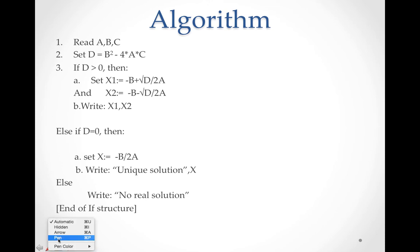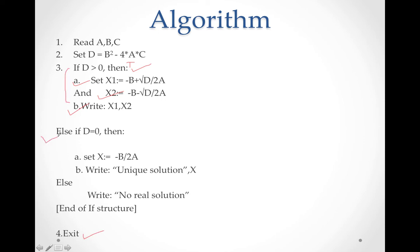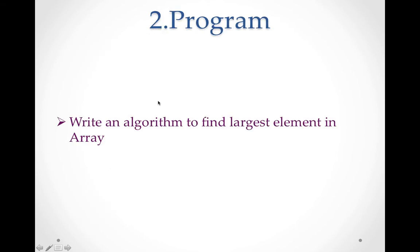Our first condition was true, so we calculated and printed both roots. We are not supposed to do the remaining procedures — we just exit the program. If the first condition had been false, we would have jumped to the second. This is your board program or board algorithm — it will give you 4 marks. Practice it with compilation and keep the formula in mind. Next: write an algorithm to find the largest element in an array.